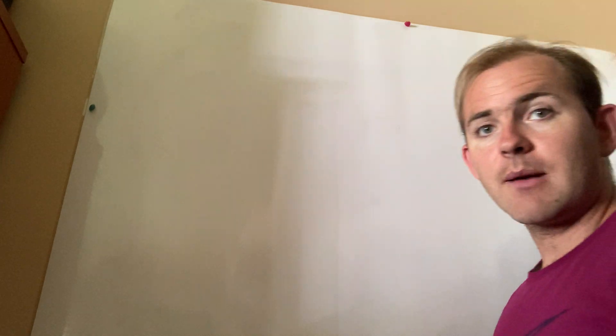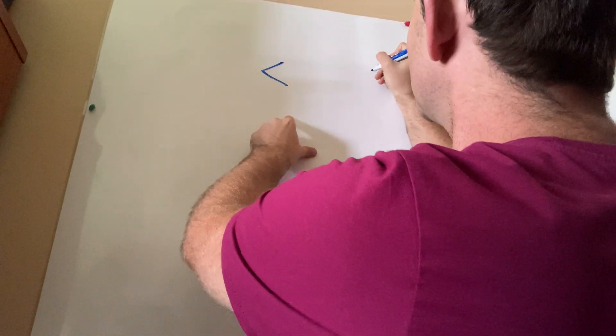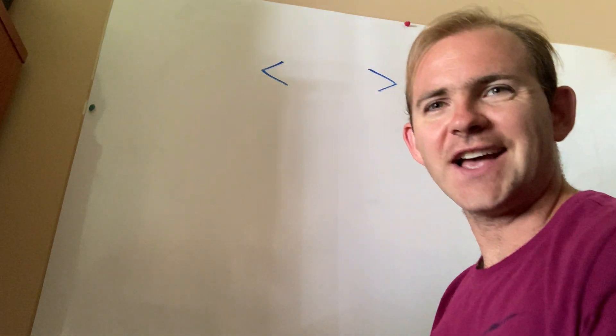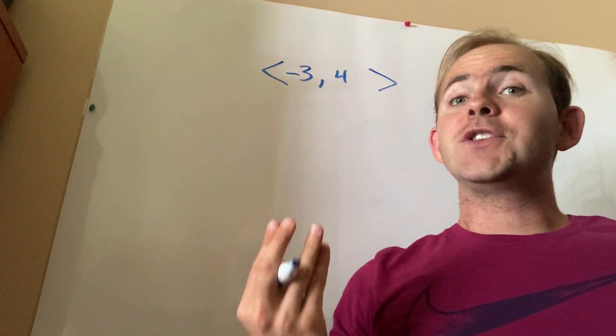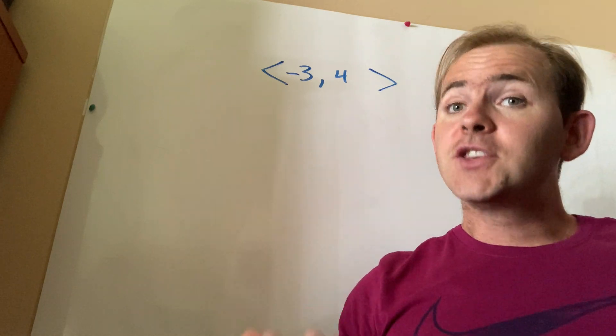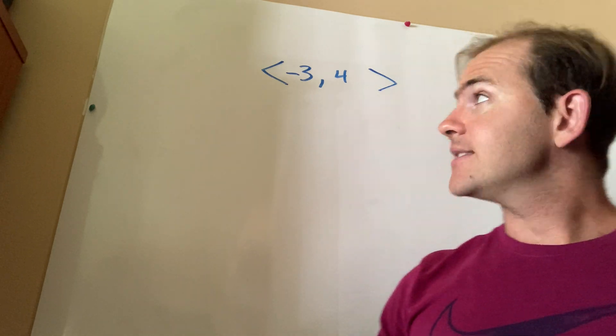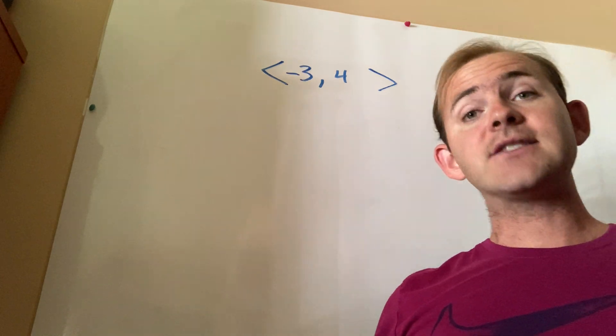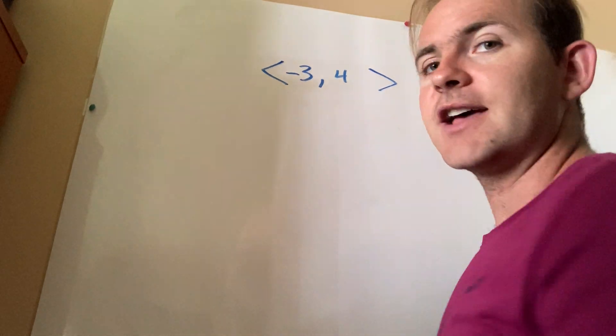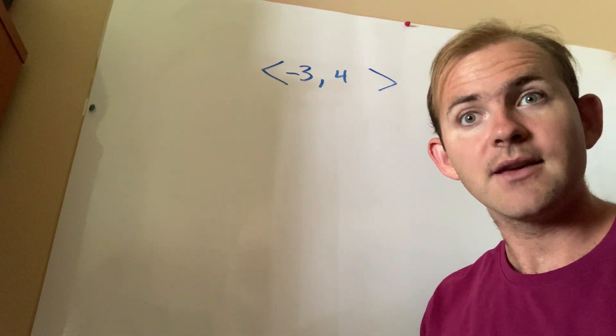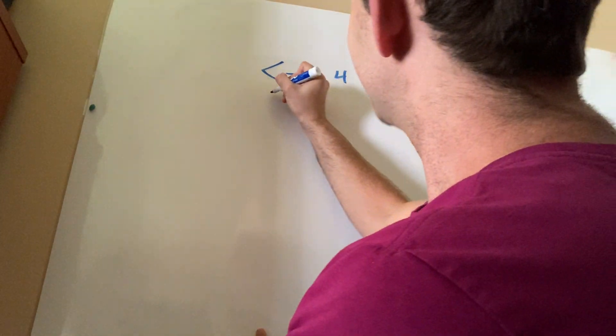And the way that we represent a vector is as follows: two kind of like sideways Vs and then numbers. So I'm just going to give you a random example here, like let's say negative 3 comma 4. For your purposes, all you need to know is how to read this in terms of coordinate rules instead. So if they give you a vector like this and ask you to perform this transformation, you know what you're actually doing?